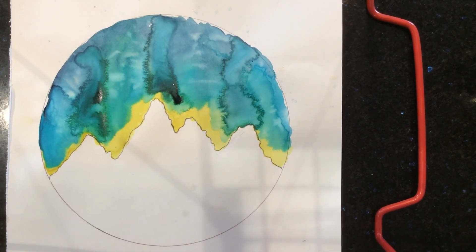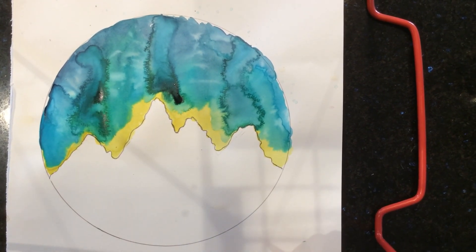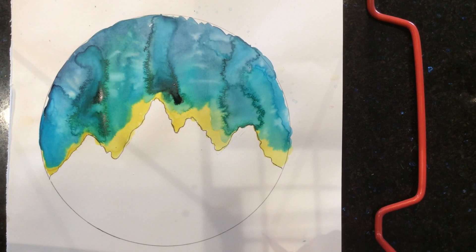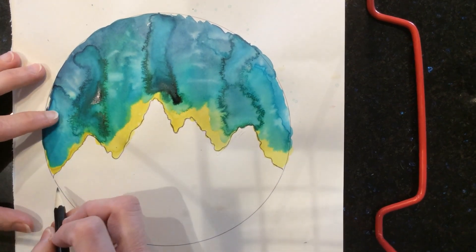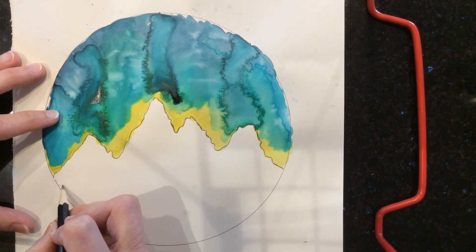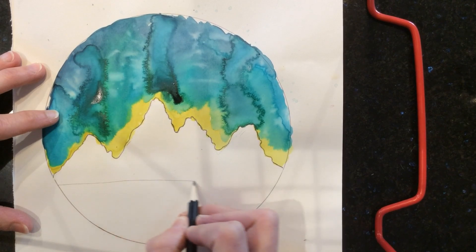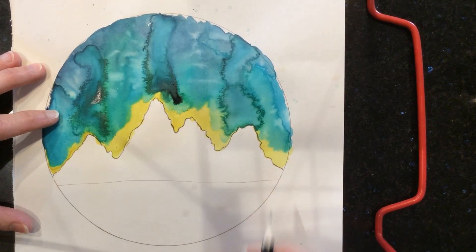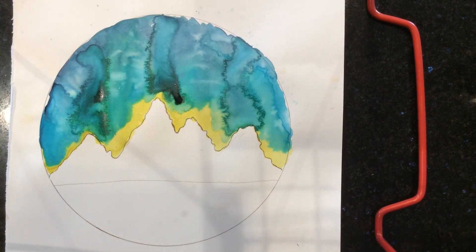The next thing I'm going to do is I'm going to take my pencil and I'm going to create a horizon line. The horizon line needs to come a little bit below your mountains and just go straight across like that. That is our horizon line.